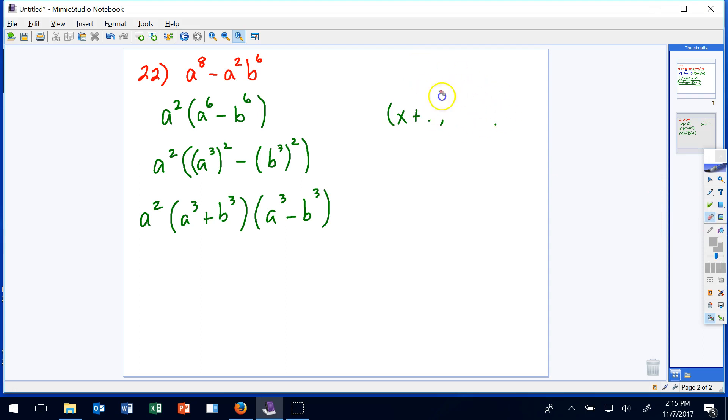All right, now the great thing about this is we can factor more because we've learned how to factor the sum and the difference of two cubes. So go back if you have to look at your notes. Here's the sum of two cubes factored: cube roots, square of the first minus the product of the two terms plus square of the last.